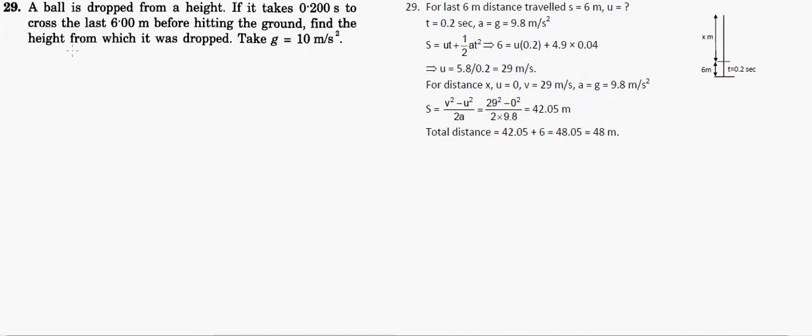Hello friend, let's see question number 29. A ball is dropped from a height. If it takes 0.2 seconds to cross the last 6 meters before hitting the ground, find the height from which it was dropped.